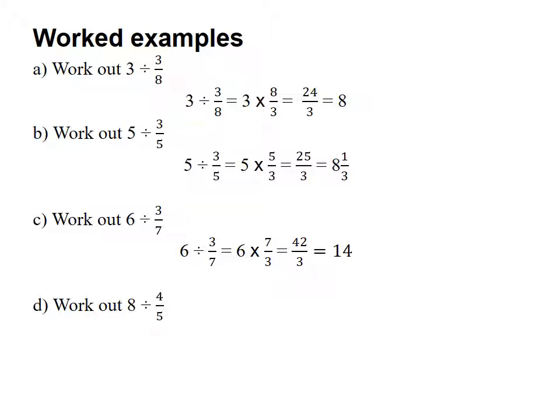And part D, we're going to work out 8 divided by 4 fifths. Invert and multiply becomes 8 times 5 over 4. 8 fives are 40. 40 divided by 4, the answer is 10.